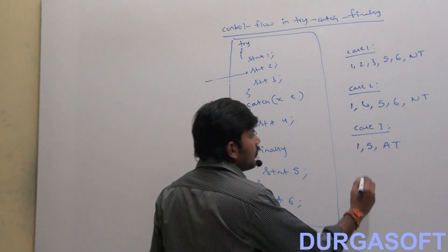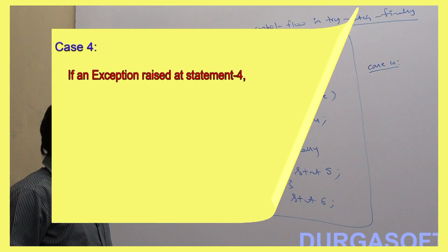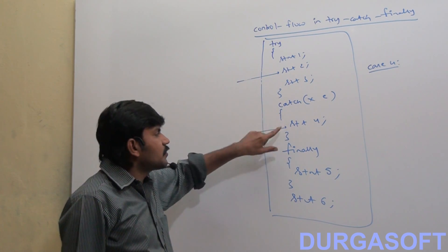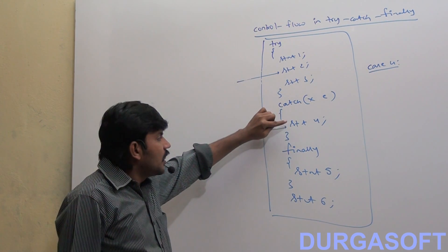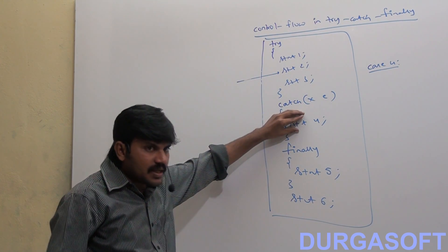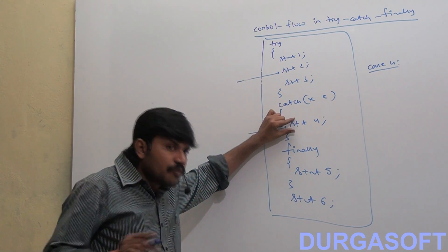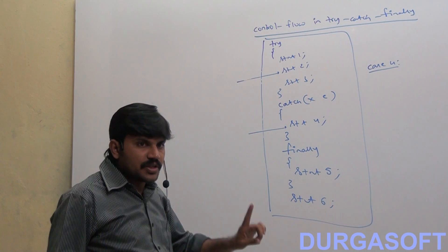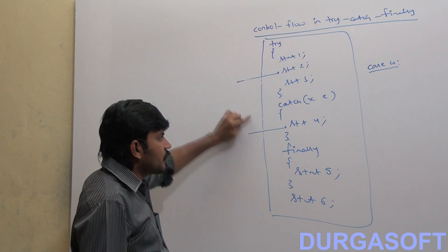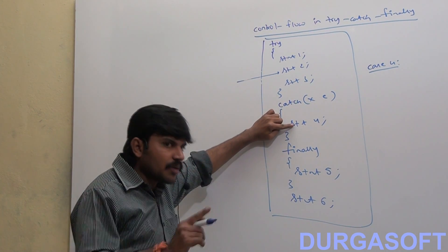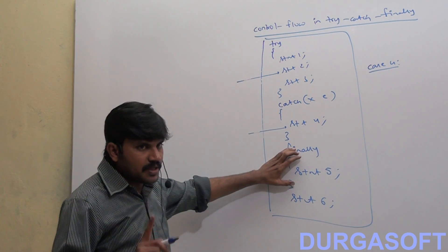Case 4: If an exception rises at Statement 4, which is inside the catch block — is it normal or abnormal termination? Abnormal, because Statement 4 is not part of any try block, so there is no catch block to handle it. It is always abnormal. But before abnormal termination, the finally block will compulsorily be executed.